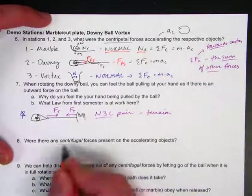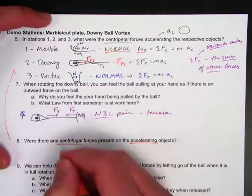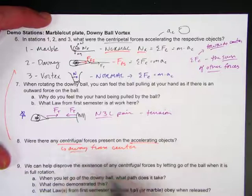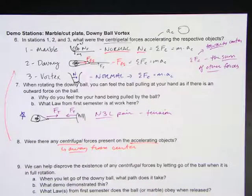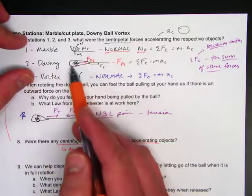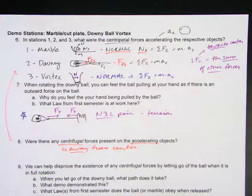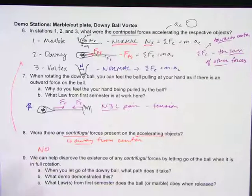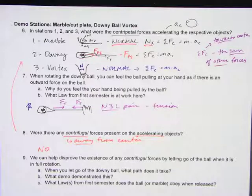Were there any centrifugal forces — forces away from the center — present on the accelerating objects? Centrifugal forces are often referred to as fictitious forces. Think of centrifugal as a direction. In these cases, are there any forces outward on the ball, the plug, or the penny in the vortex pulling in the outward radial direction? The answer is no. But that doesn't mean there can't be any — there are scenarios where centripetal and centrifugal forces counteract each other, and if the centripetal force is greater, you have centripetal acceleration and a circular curve.